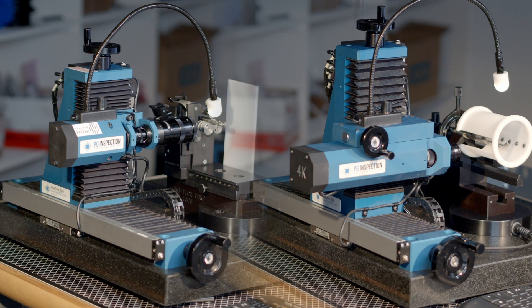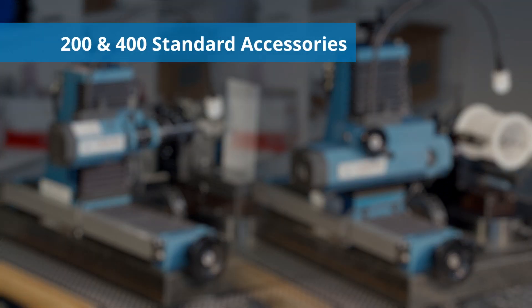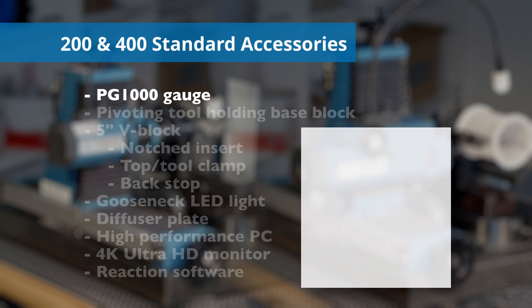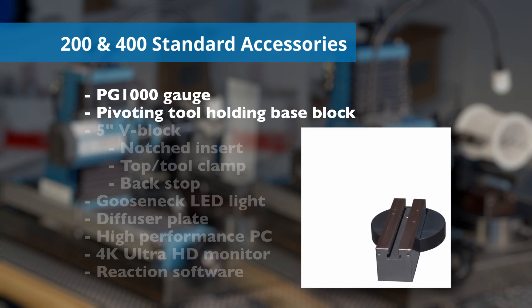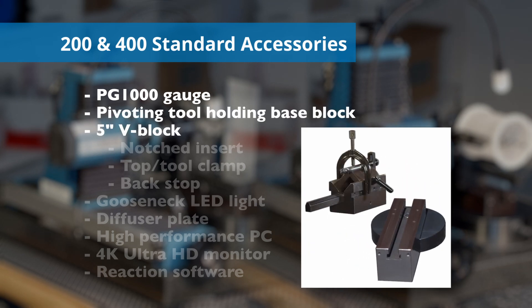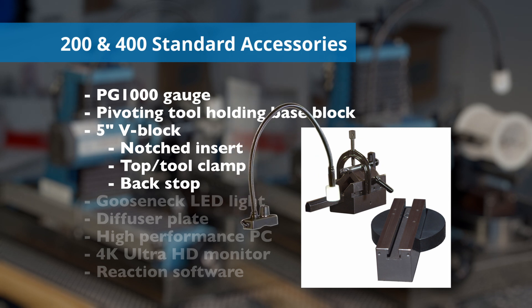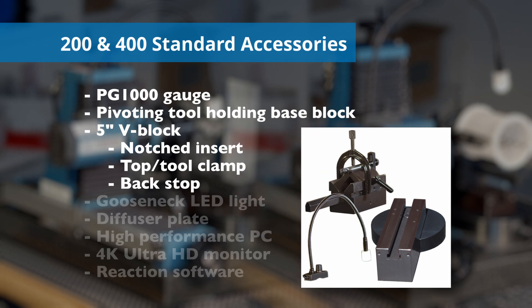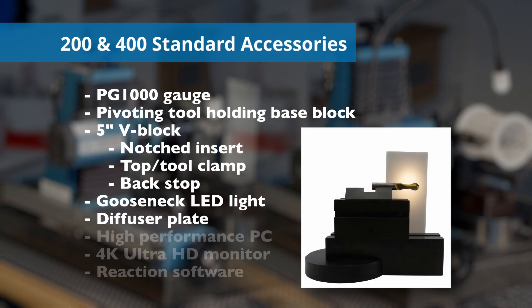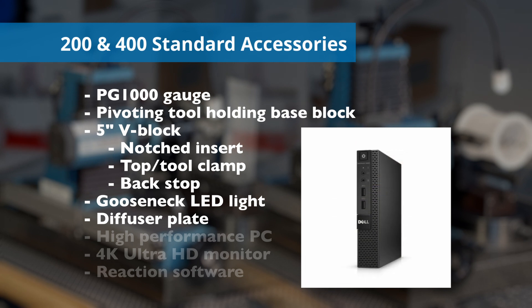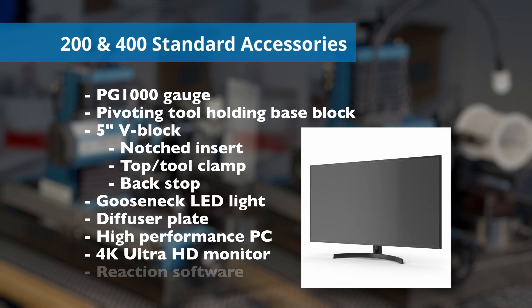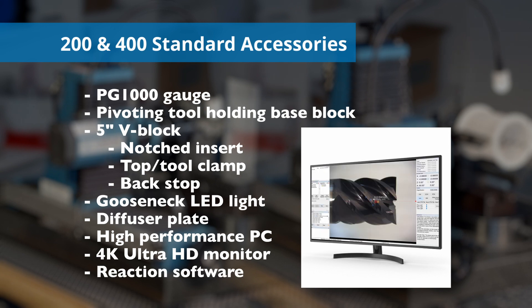No matter which option you choose, you'll receive the following standard accessories: a PG-1000 gauge, a pivoting base block for tool holding fixtures, a 5-inch V-block assembly which includes a notched V-block insert, a top or tool clamp, a carbide tipped backstop, a variable intensity 18-inch gooseneck LED work light with a diffuser cap, a magnetic white diffuser plate, a high-performance PC, a 4K Ultra HD monitor, and reaction software with free upgrades for life depending upon your hardware.